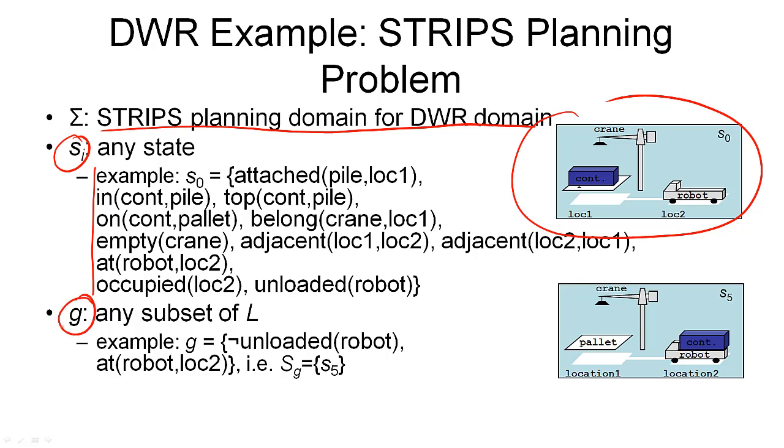And then I have to pick a goal, which is a set of ground literals. In this case, I want the robot to be loaded with a container. So it is not unloaded. And I want the robot to be at location two. These are my two goal conditions. And in this simple example, there's only this one state that is a goal state.